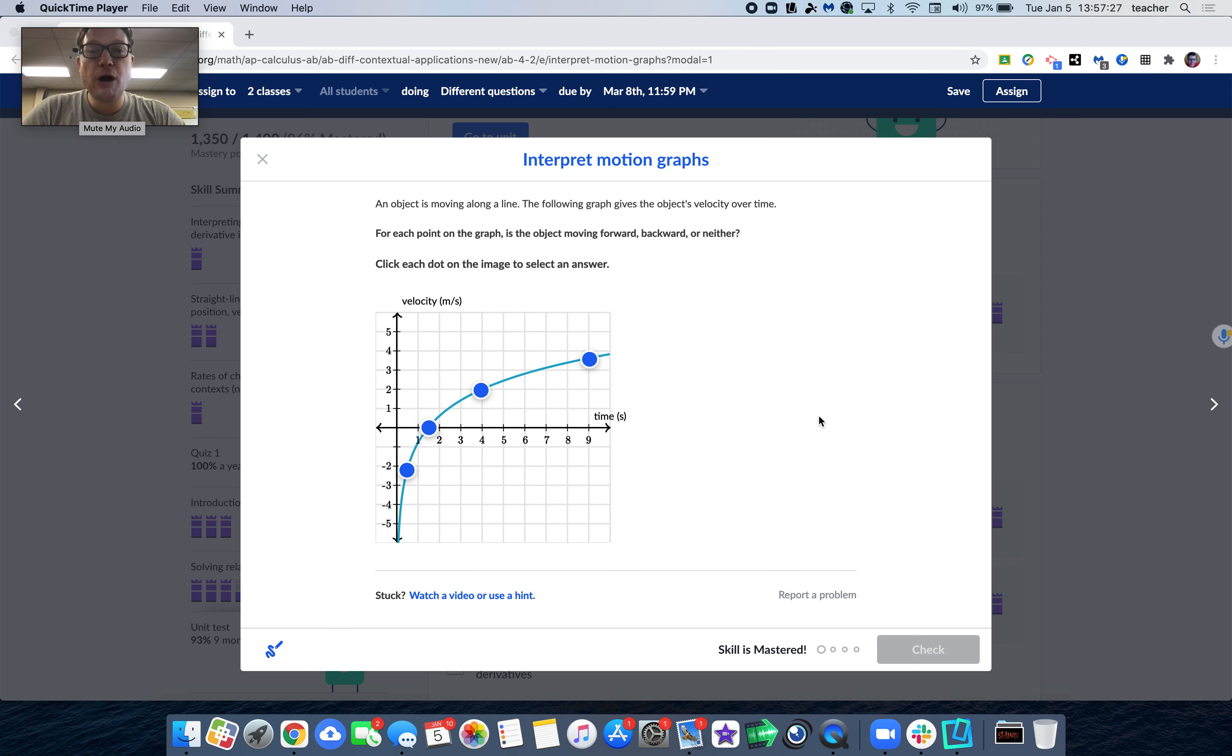For an object moving along a line, the following graph gives the object's velocity. You can see it on the y-axis over time. So slopes at various points on the velocity curve must be accelerations.